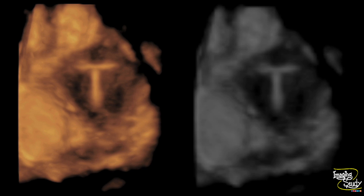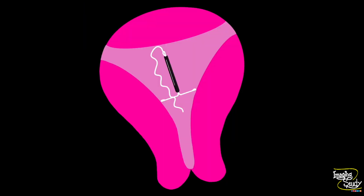If you do three-dimensional ultrasound of the uterus — whether transvaginal or transabdominal — you can easily understand the normal orientation and position of the intrauterine contraceptive device. You can see this T-shaped appearance is well visualized here. This horizontal part should obviously be present at the upper part of the uterus.